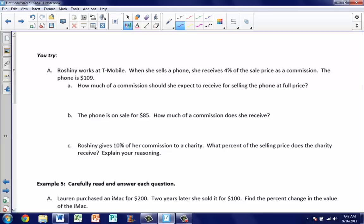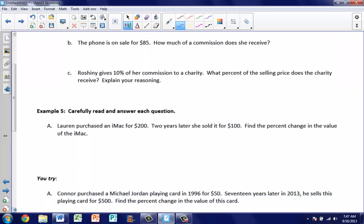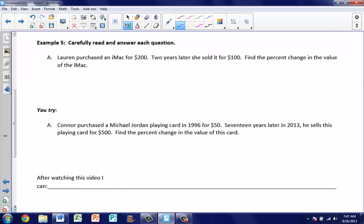We have one more example. Let's take a look at example 5. This is going to be one of those percent change problems. So we're going to use that formula that we talked about at the beginning of this video. Lauren purchased an iMac for $200. Two years later, she sold it for $100. We want to find the percent change in the value of the iMac. Our formula has a numerator and a denominator. In the numerator, this is the amount of either the increase or the decrease. In the denominator, that's the original amount. Let's start with the denominator because that's the easier of the two. How much was it when Lauren bought it originally? It was $200.